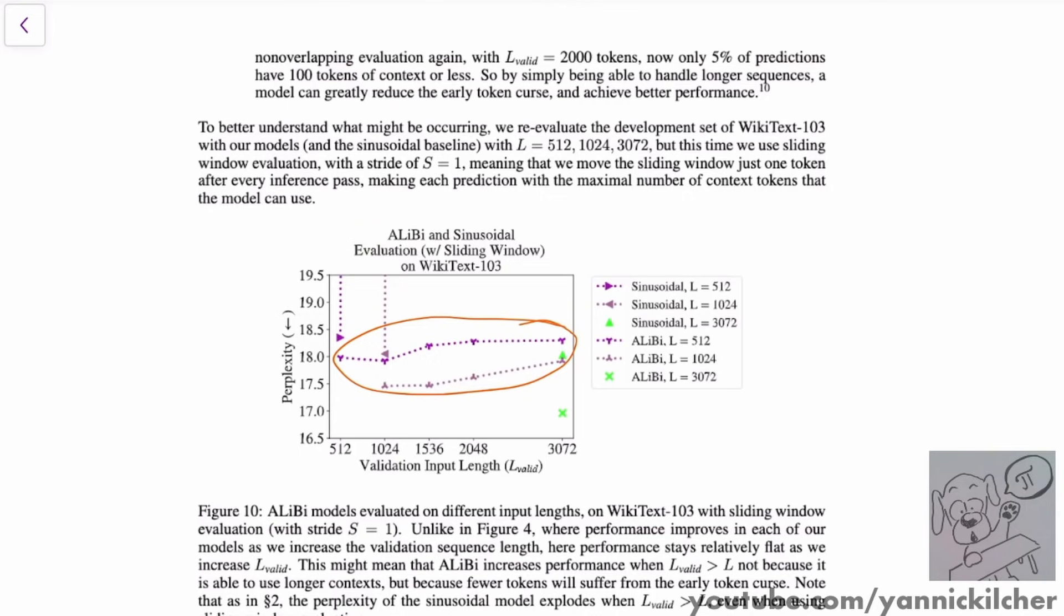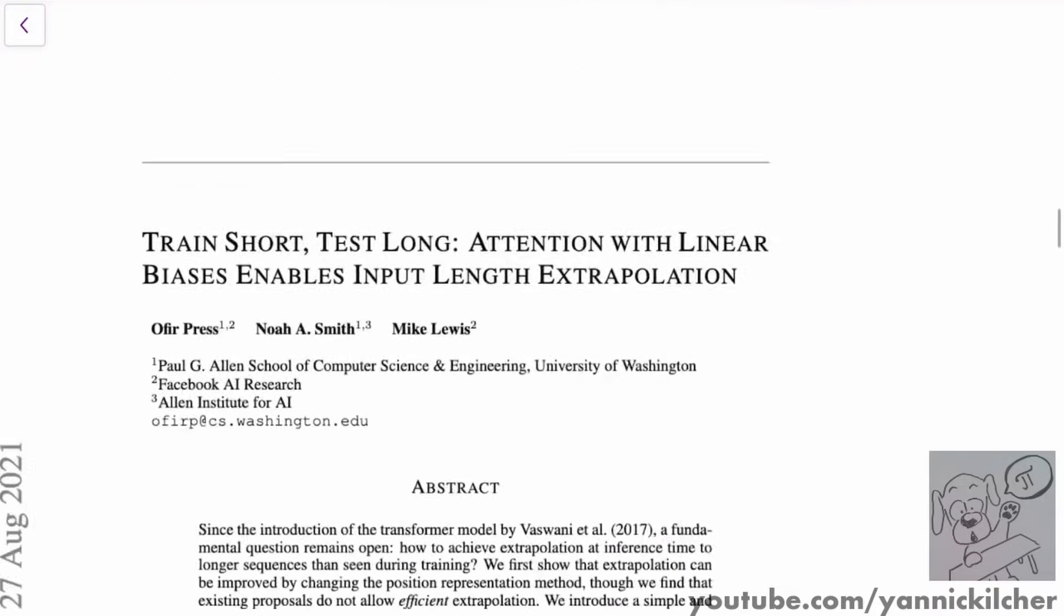Hey, this is Janik from the future. Just a short addendum here to make it clear. And they also describe this in the paper. What is probably happening isn't that the transformer is all of a sudden able to reason about much longer contexts, but what is probably happening is that it still only looks at the most recent context because the more distant past has been down weighted so much by these biases that it becomes irrelevant. But nevertheless, it still enables the transformer to handle these long sequences. And potentially if something's really important in the past, it can pick up on that. All right, back to the video.